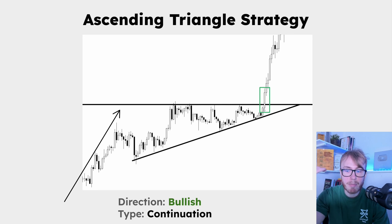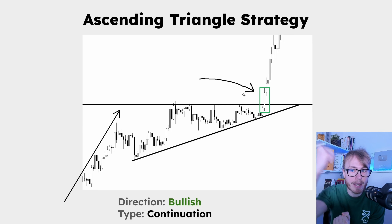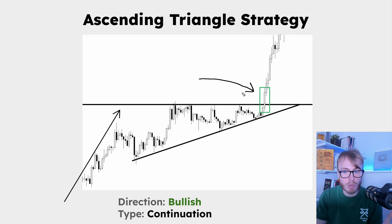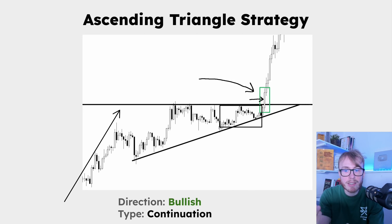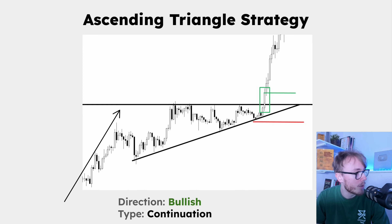The most common entry point is to enter at the break above resistance, and as with pretty much all breakout entries, what we're looking out for is that the candle that breaks out should be strong — we want the real body of the candle to be larger compared to the real bodies of the candles inside the triangle. So we buy at the candle close of the breakout candle.